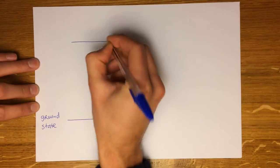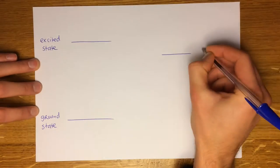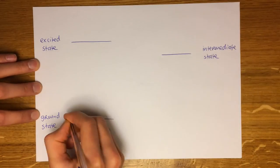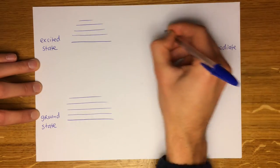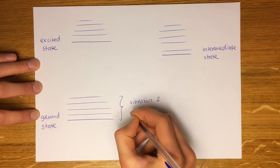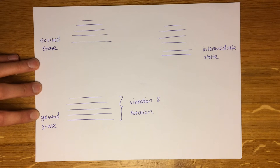We have a ground state, an excited state and an intermediate state. Each state has additional levels that signify the energies that go into vibration and rotation of the atoms inside the molecule.